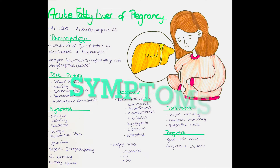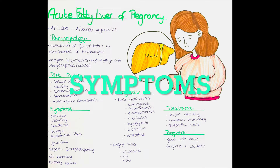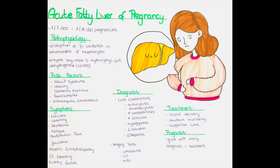What are symptoms of acute fatty liver of pregnancy? It typically manifests itself in the third trimester of pregnancy, so averagely in the 35th week of gestation, and initially manifests itself with nonspecific symptoms such as nausea, vomiting, headache, fatigue, and abdominal pain.